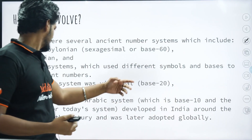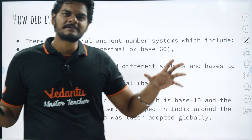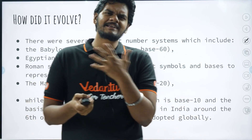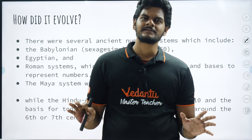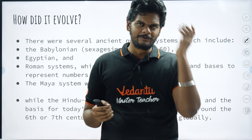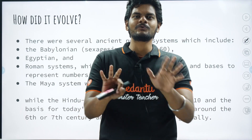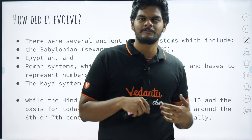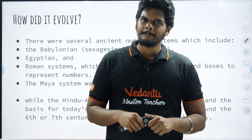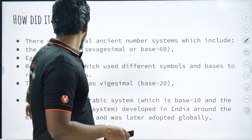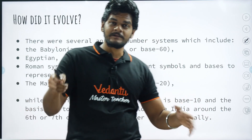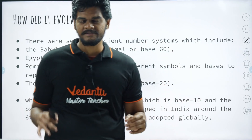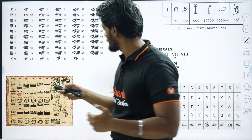Europeans came to learn about this base 10, and they found it quite natural because we have 10 fingers — it is easy to count numbers in base 10. If you do not know what a base is, do not worry. We will learn about bases and changing bases and everything. When Europe discovered the base 10 number system, they adopted it. The whole of Europe slowly and steadily adopted the base 10 number system.